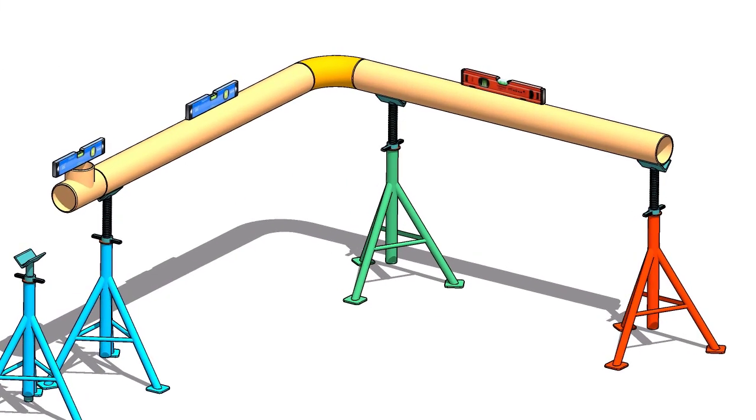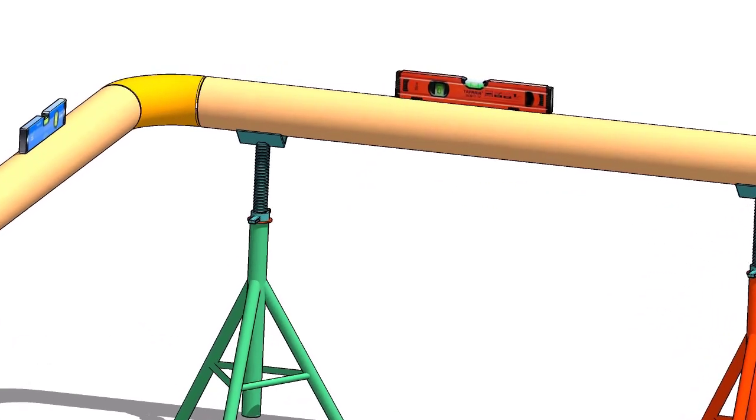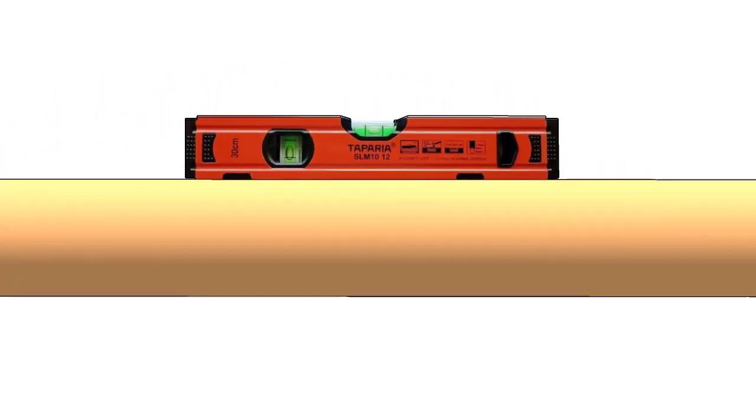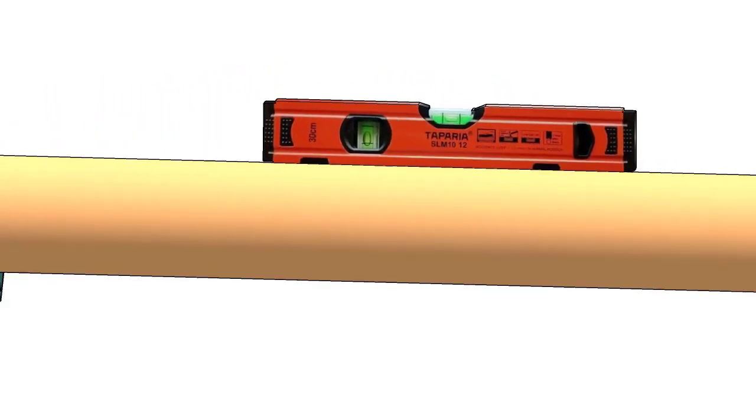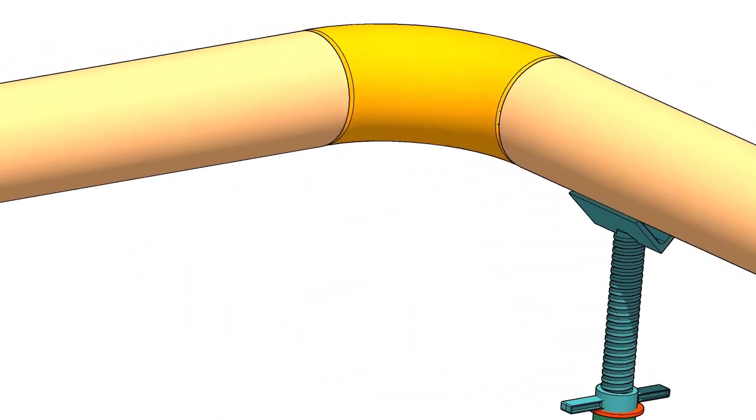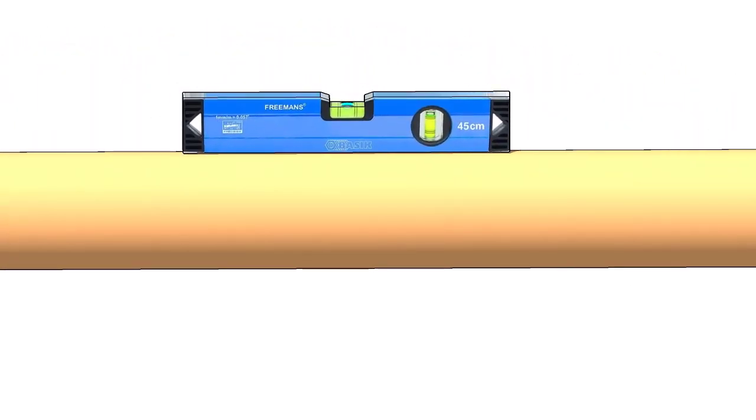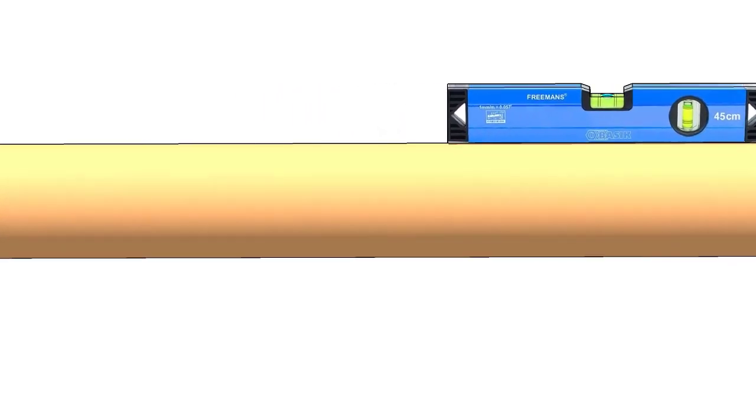First thing to do is to make sure the already fabricated spools dimension and level are acceptable. Mark the center lines of the tee and the elbow.